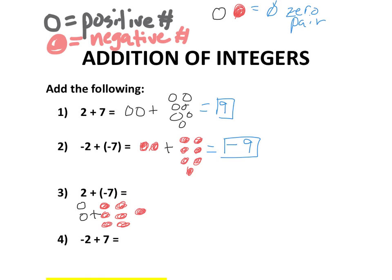As we look at problem number 3, I can pair up one positive with one negative — those values together become 0, so I can take away those counters. I can make a second zero pair with those two, and then just count what's left over: one, two, three, four, five red counters. Five red counters have a value of negative 5. So positive 2 plus negative 7 has a value of negative 5.